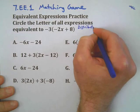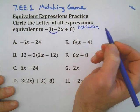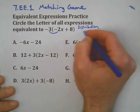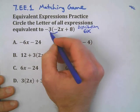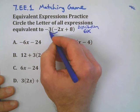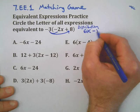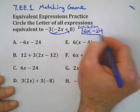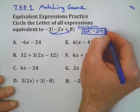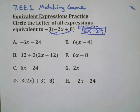So we're going to go: negative 3 times negative 2x makes 6x, and we're also going to distribute the negative 3 over the other term, which gives us negative 24. So 6x minus 24 is what we're really looking for.